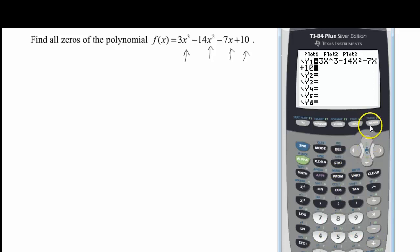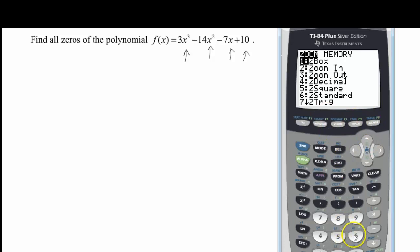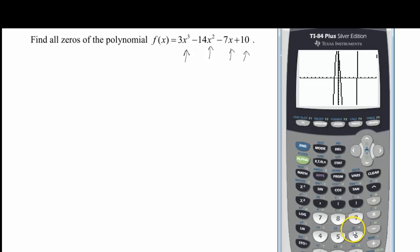Now if we're lucky, we will actually be able to, let me do a zoom in number 6 for my standard window. If we're lucky, we can actually see some of these zeros. And sure enough, I see it's crossing my x axis here 1, 2, 3 times. So we need to figure out what those three zeros are.